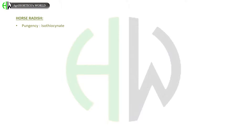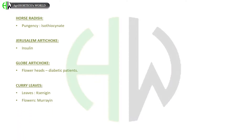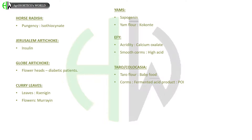In horseradish, pungency is due to isothiocyanate. Jerusalem artichoke contains inulin. Globe artichoke flower heads are useful for diabetic patients. In curry leaves, leaves contain xenigin whereas flowers contain moraine. Yams contain sapogenin. Yam flour is called ascoponte. In elephant foot yam, acridity is due to calcium oxalate, and smooth corms are high acidic in nature. In taro or colocasia, taro flour is referred to as baby food. Corms are used for fermented acid products. In cluster bean, galactomannan — a mucilaginous substance — is used for preparation of guar gum. Young plants contain HCN, which is toxic to animals.